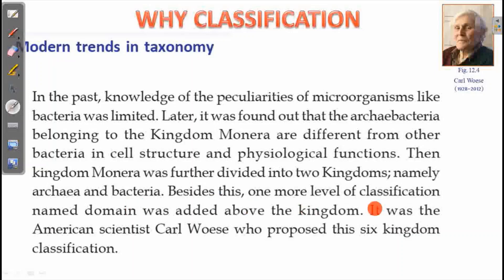Besides this, one more level of classification — domain — was added above the kingdom level. It was the American scientist Carl Woese who proposed this six kingdom classification, along with the concept of domain as the highest level of classification.